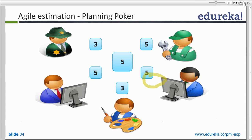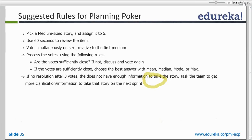Each team member is given a complete deck — he would have all the cards with numbers 1, 2, 3, 5, 8, 13, and so on. On a big screen, the Scrum master would have all the requirements listed by priority. The Scrum master would read each requirement one by one and the team would estimate it together in a common room.